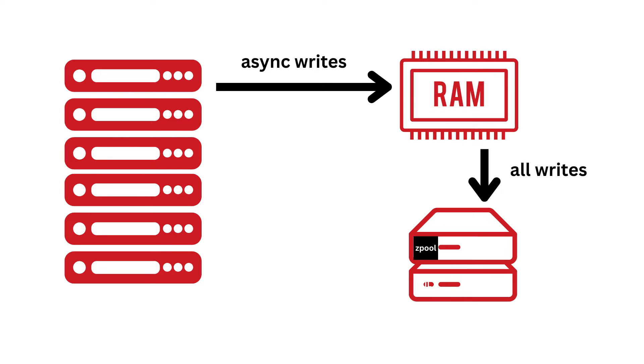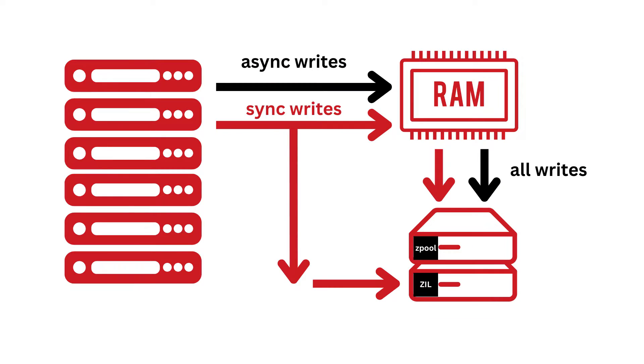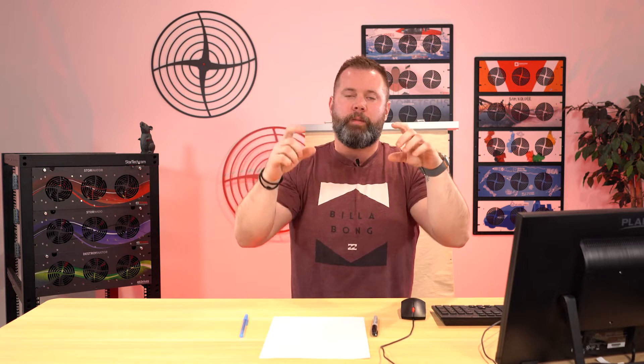Asynchronous means when data comes in, it goes into memory. As soon as it hits memory, the acknowledgement goes back to the client saying the write is finished, even though that isn't strictly true. Synchronous writes, however, actually get committed to what's called the ZFS intent log, which is on disk. As soon as that happens, the acknowledgement goes out, because the data is actually committed somewhere safe.